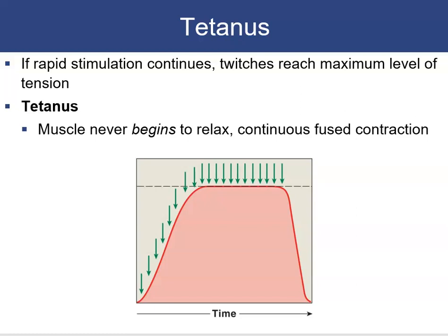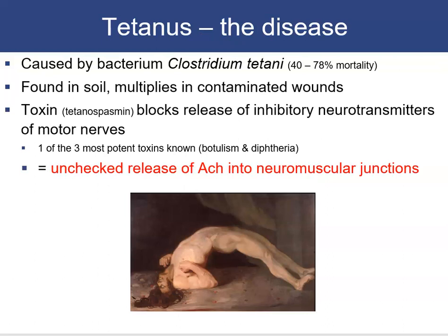If rapid stimulation continues, twitches reach a maximum level of tension and tetanus occurs — the muscle never gets a chance to relax, producing continuous fused contraction with no relaxation phase. Tetanus the disease is caused by the bacterium Clostridium tetani, with a 40–78% mortality rate. Its toxin blocks the release of inhibitory neurotransmitters — one of the three most potent toxins known (along with botulinum and diphtheria toxin) — resulting in unchecked acetylcholine release and constant muscle stimulation.